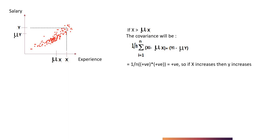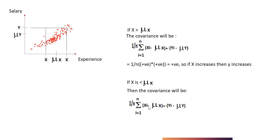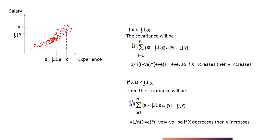Now let's consider another point where x is less than mu_x and y is wherever it is. Here x is less than mu_x, so based on the covariance formula, (x_i minus mu_x) is negative because it is a smaller value, and this is positive because it is a bigger value. So negative into positive will be negative. That means if x decreases then y will increase, and if x increases then y will decrease. This is called the inverse covariance relation.